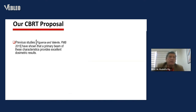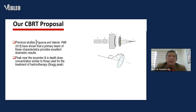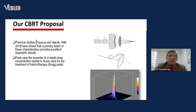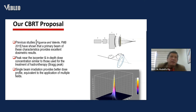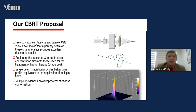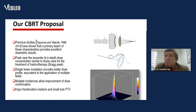Our proposal, CBRT: studies have shown that beams of this characteristic provide excellent dosimetry results. A peak near the isocenter — deep dose concentration similar to those used in hadron therapy. Similar ring irradiation provides a better dose profile equivalent to the application of multiple fields. Multiple incident beams allow improved dose conformation, supporting hypofractionation, fractionation, medium, and small-site PTVs.